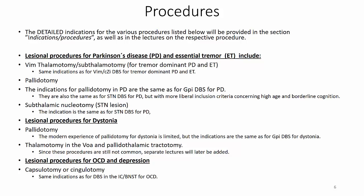Lesional procedures for dystonia include Pallidotomy; however, the modern experience of Pallidotomy for dystonia is limited, but the indications are the same as for GPI DBS for dystonia. Thalamotomy in the ventral oral anterior and Pallidotalamic tractotomy are emerging, but these procedures are still not common and separate lectures will later be added. Finally, lesional procedures for OCD and depression — Capsulotomy or Cingulotomy — the indications of which are the same as for DBS in the internal capsule or bed nucleus of the stria terminalis for OCD.